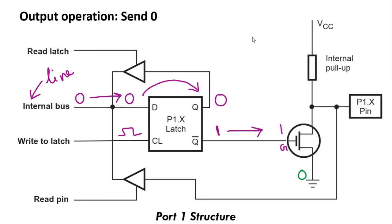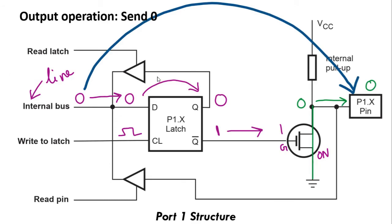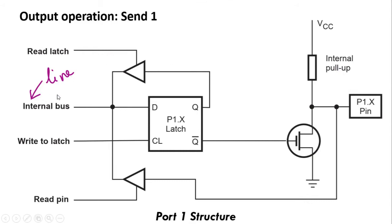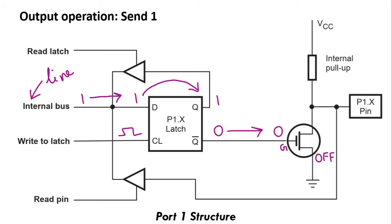Q bar will be 1. This 1 is given to the gate of the FET, turning the FET on and connecting source to drain, so the pin is pulled to ground — logic 0 is sent. Similarly, I can send 1: the internal bus is 1, stored in the latch on the write-to-latch signal. Q becomes 1, Q bar becomes 0. 0 is given to the gate, so the FET turns off. Ground is not connected to the pin, so it goes to a high impedance state, but the internal pull-up pulls it to VCC — logic 1. That is why when I give 1, I get logic 1 at the pin.